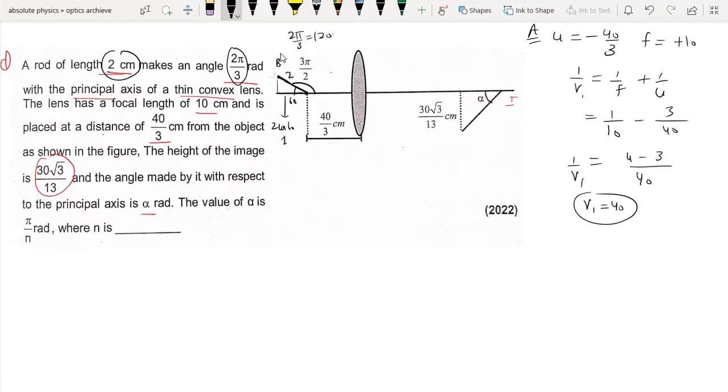This is 1, that means end B is at 43 by 3. This distance, because the angle is 60 degrees given, corresponds to U which is minus 40 by 3.